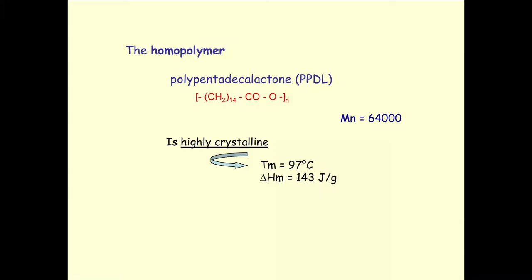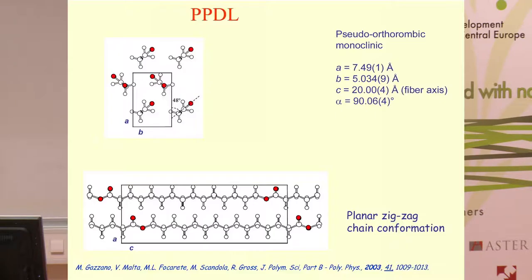Pentadecalactone is a very large lactone. By classical chemistry it is very difficult to obtain high molecular weight macromolecules, whereas using enzymes this is quite easy — you can obtain polymers with a number-average molecular weight of about 60,000–70,000. It is a highly crystalline polymer that melts around 100°C with a large enthalpy of fusion. Several years ago, at the beginning of this work, we determined the crystal structure of this homopolymer, polypentadecalactone.